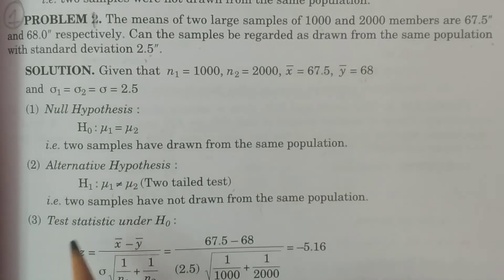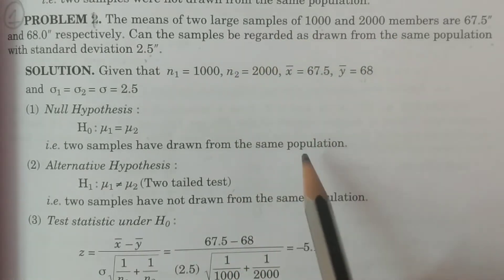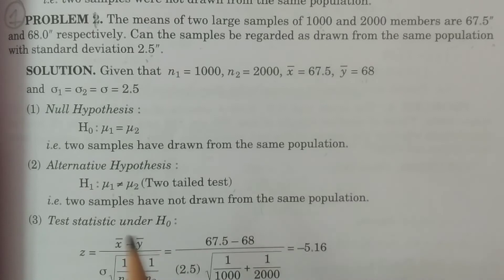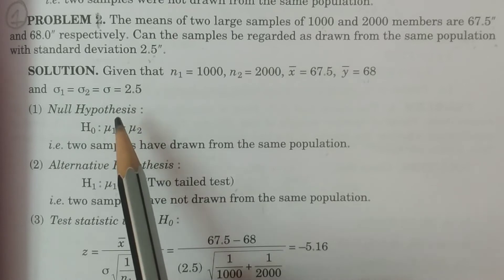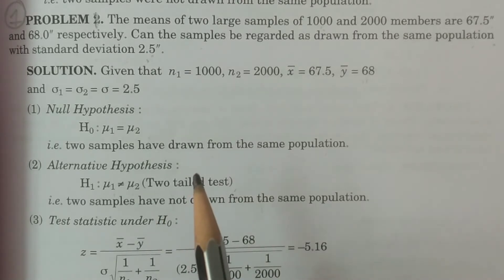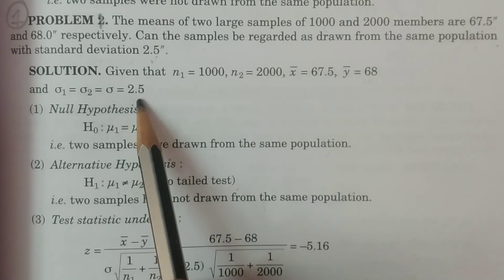There are two cases in the test for two means, since the means are specified. Case 1: σ1 = σ2 = σ is known. Case 2: σ1 and σ2 are not known. Here, σ1 = σ2 = σ = 2.5, therefore sigma is known — it is Case 1. Therefore the test statistic under H0 applies to the case where σ1 = σ2 = σ.